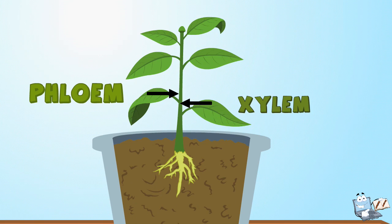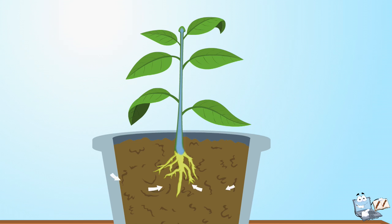The xylem lies towards the interior part of the root, whereas the phloem lies towards the exterior part of the root. These tubes help in bringing water and minerals from the soil to its leaves.